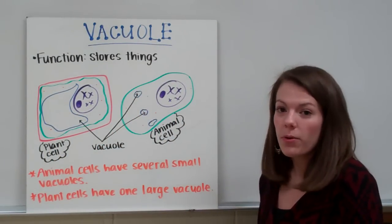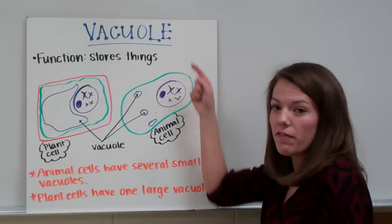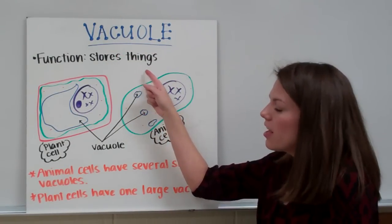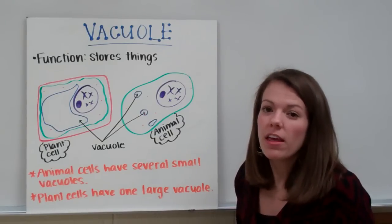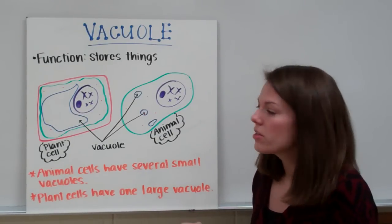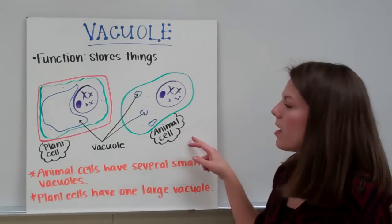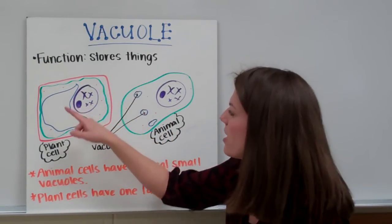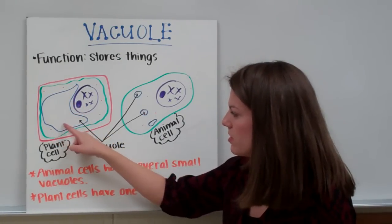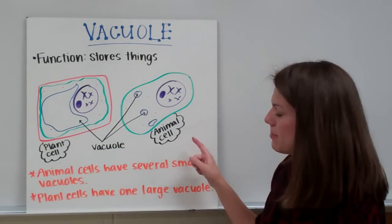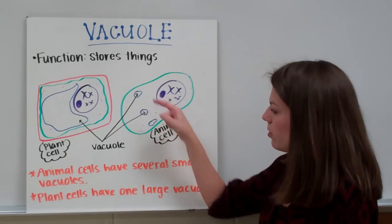The next organelle is a vacuole, and its function is to store things. A vacuole looks different in plant cells versus animal cells. Plant cells have a very large vacuole, represented by a large blue structure, while animal cells tend to have several smaller vacuoles.